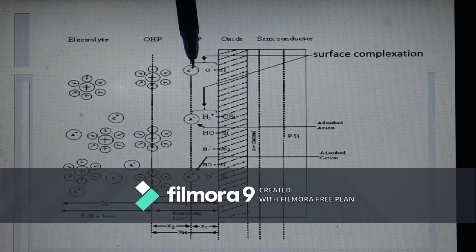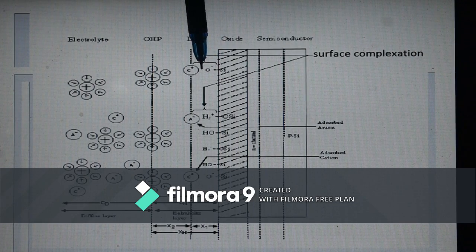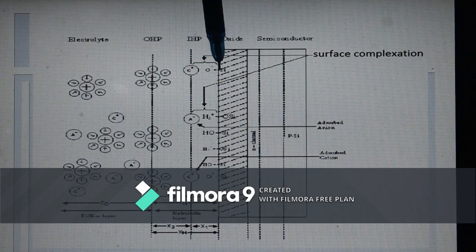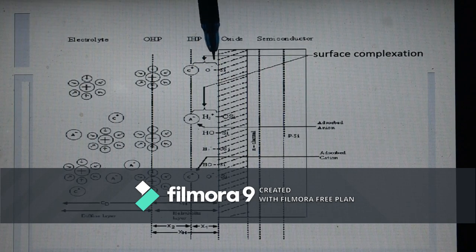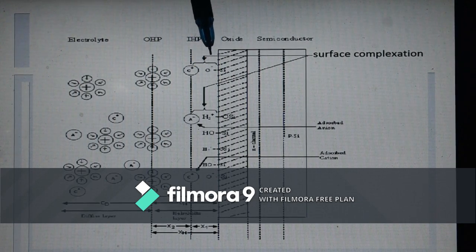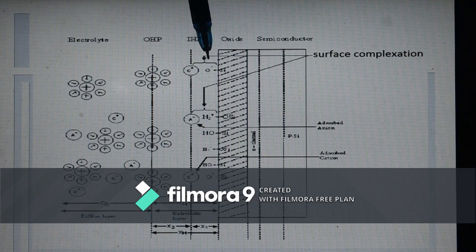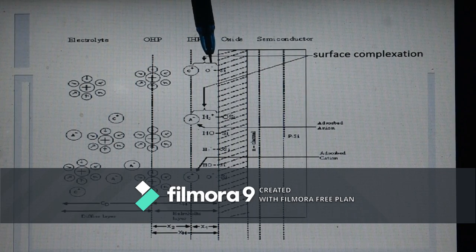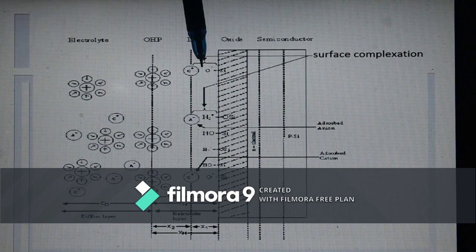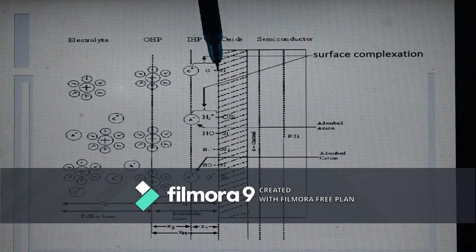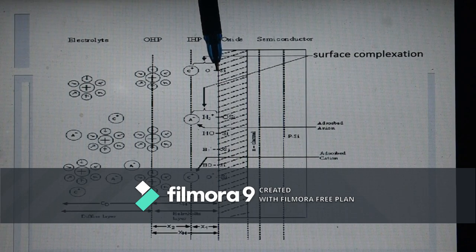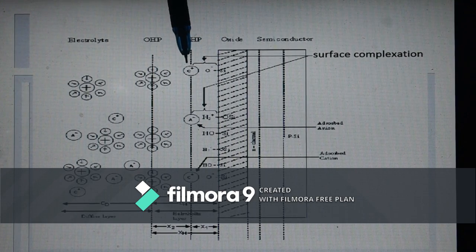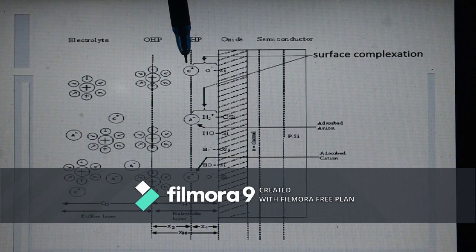Besides these potential determining ions, the electrolyte solution has cations and anions that form ion pairs with oppositely charged surface sites. For example, cation will form a pair with negatively charged surface site, a process which is called surface complexation. Similarly, anion will form ion pair with positively charged surface site. Ultimately, whether this surface will be positively charged or negatively charged will depend upon the excess number of one type of surface site over the others.